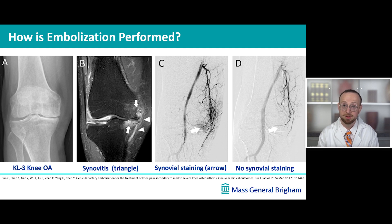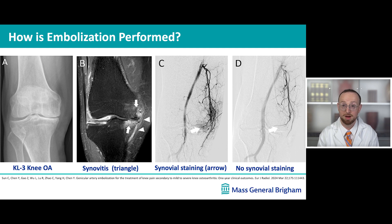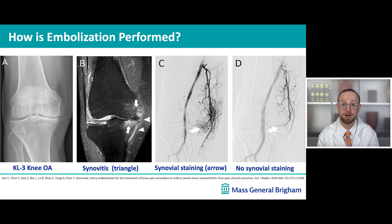What we strive to do is to prune down this overgrowth of blood vessels that have developed in an inflamed knee joint, so that we see what we see on image D — a more cleaned-up area anatomically that doesn't have this abnormal blush of the synovium. In effect, we're trying to reduce the perfusion, or the blood flow, to this abnormally inflamed area.